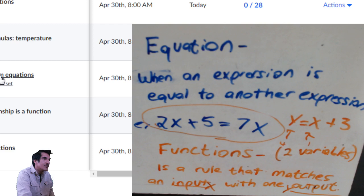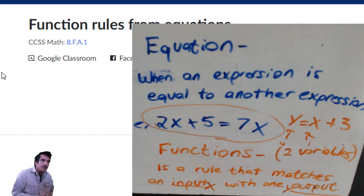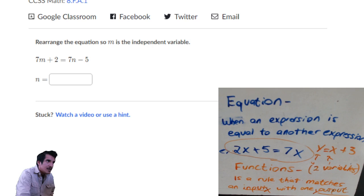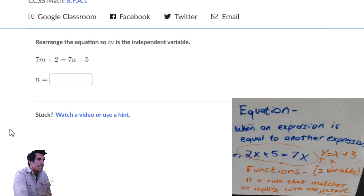I'm going to jump right into the question assignment because that's probably the one you'll want the most guidance on. This question says: rearrange the equation so that m is the independent variable.